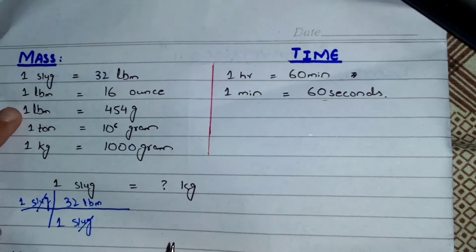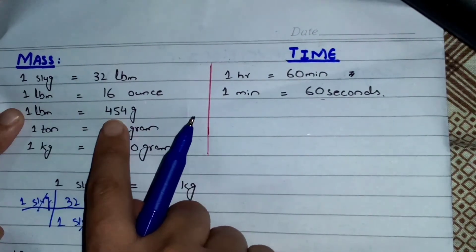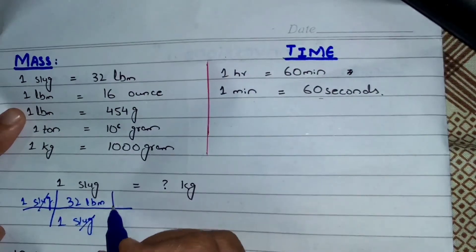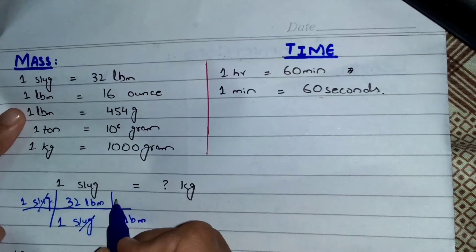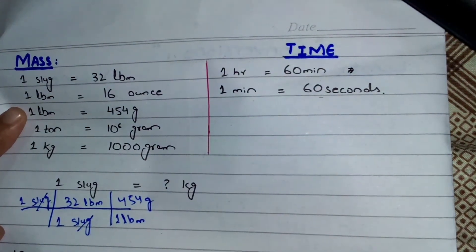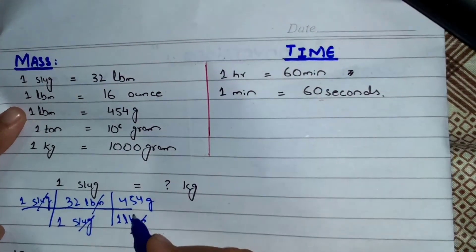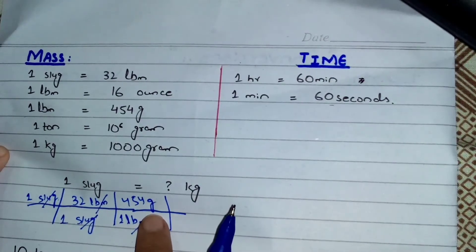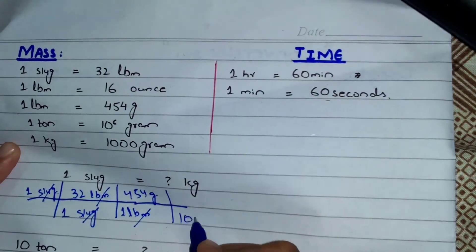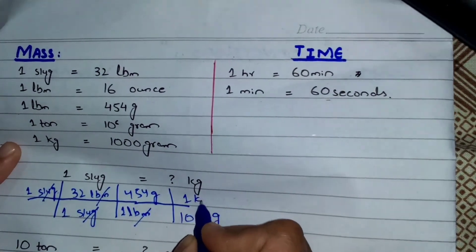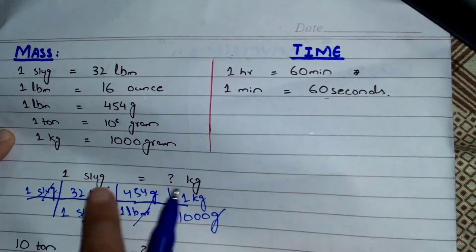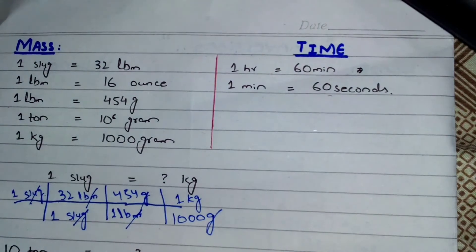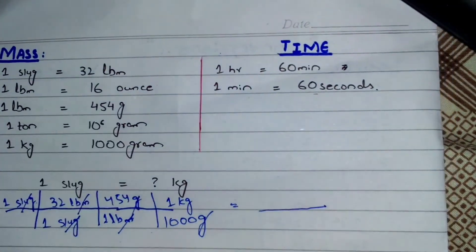Now I use the conversion one lbm equals 454 gram, placing lbm in the denominator to cancel it out. Then I know 1 kg equals 1000 gram, so I write 1000 gram in the denominator and 1 kg in the numerator — this gram cancels that gram. Now I solve: 1 × 32 × 454 divided by 1000 to get the slug-to-kg conversion.